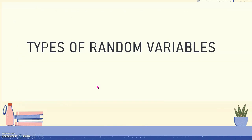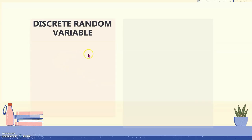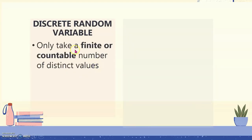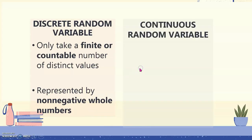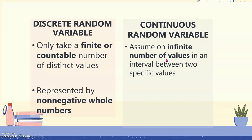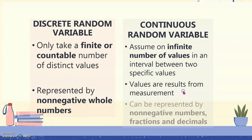Now there are certain types of random variables. First is the discrete random variable. Discrete random variables only take a finite or countable number of distinct values and are often represented by non-negative whole numbers. Continuous random variables, on the other hand, assume an infinite number of values in an interval between two specific values. Values are results from measurement and can be represented by non-negative numbers, fractions, and decimals.